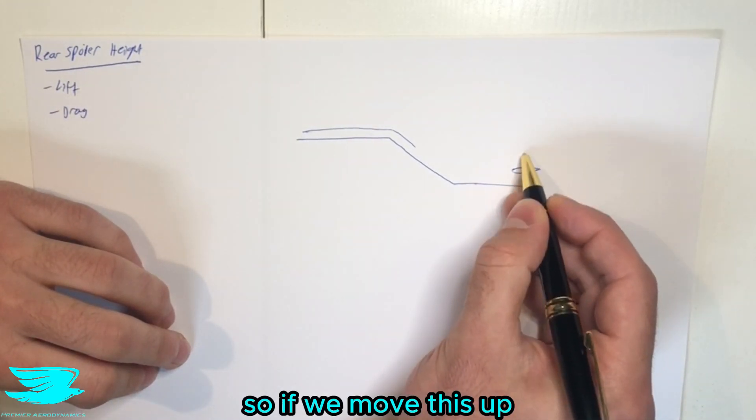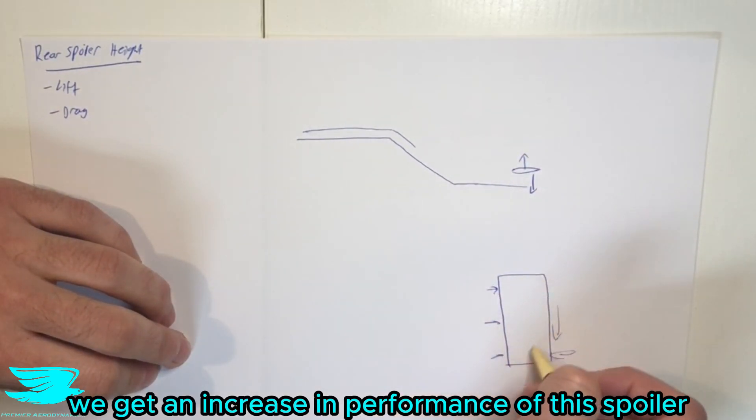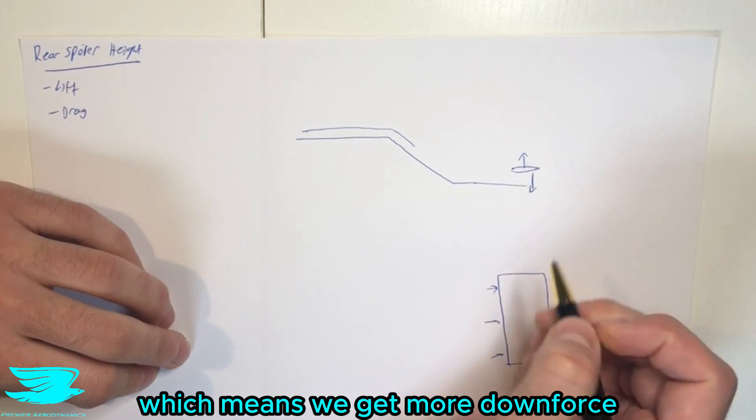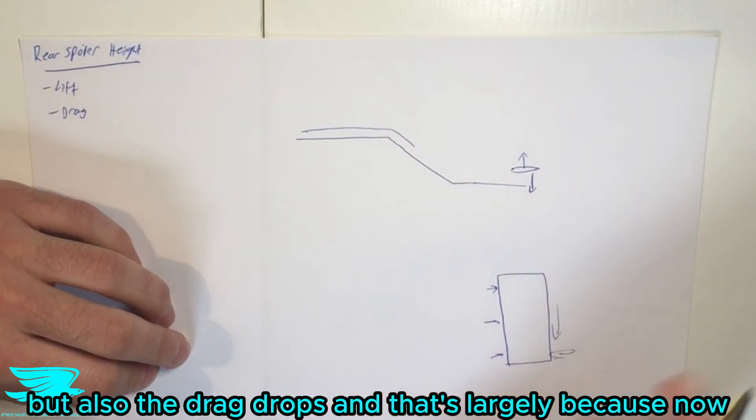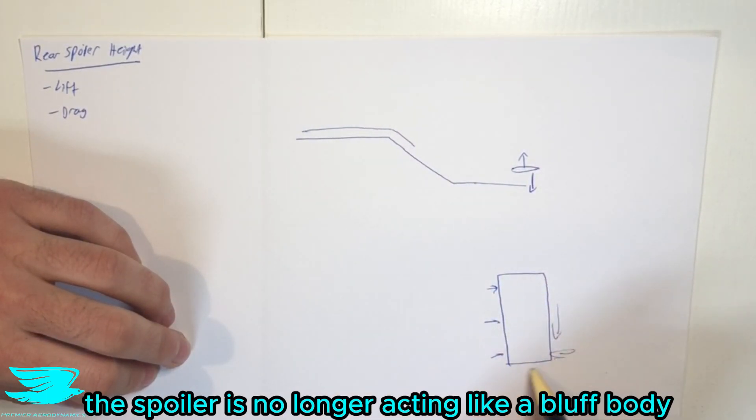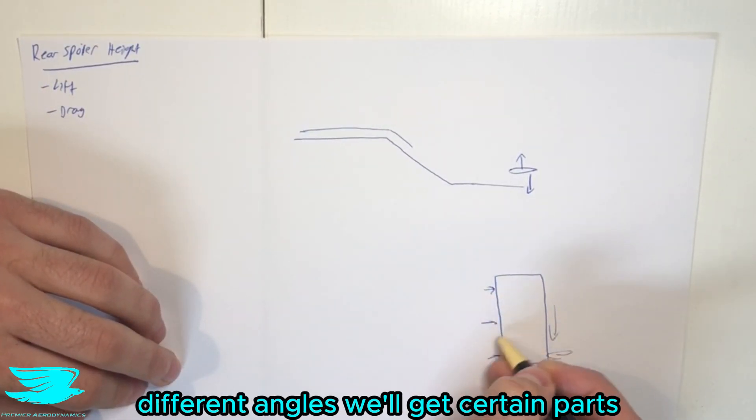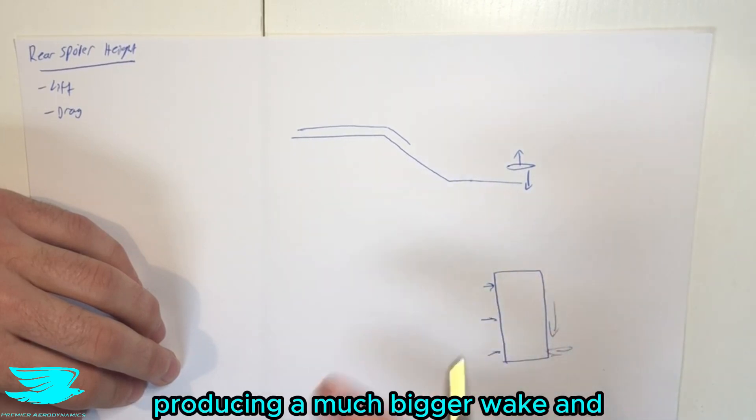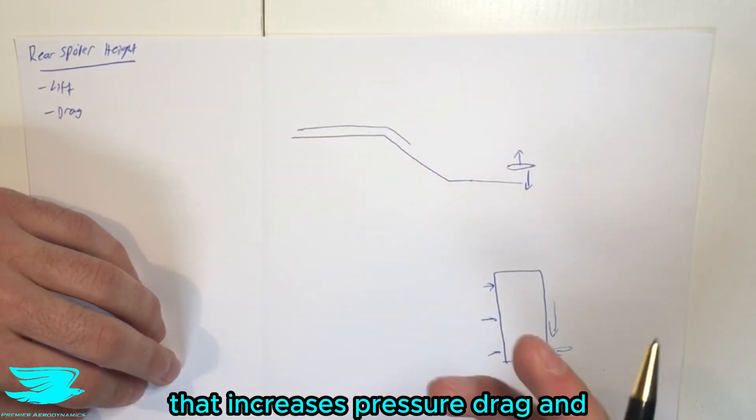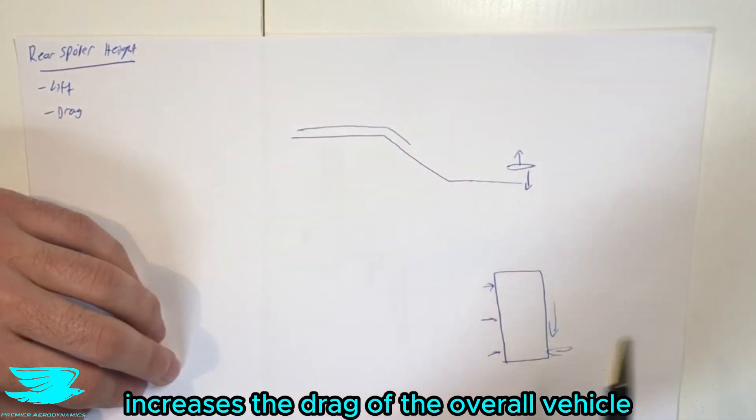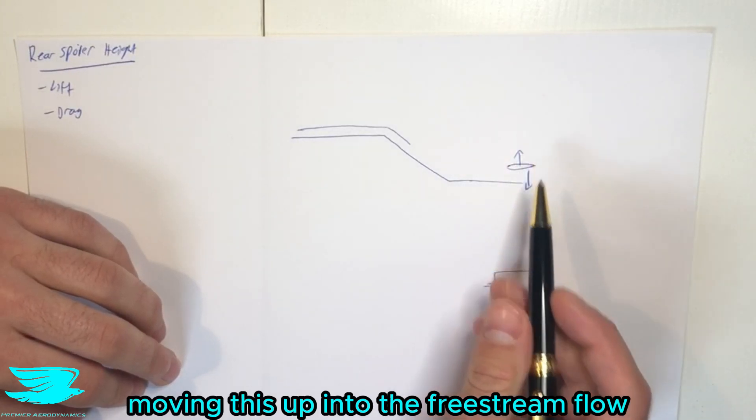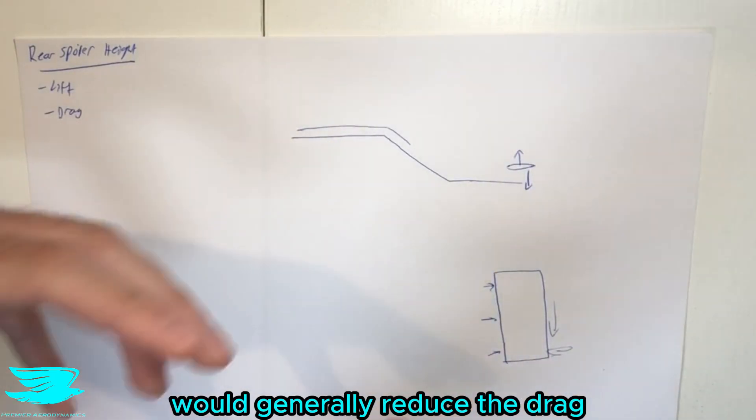So if we move this up, we get an increase in performance of the spoiler, which means we get more downforce, but also the drag drops. And that's largely because now the spoiler is no longer acting like a bluff body. Because as we mentioned here, if we have flow coming in at different angles, we'll get certain parts producing a much bigger wake that increases pressure drag and increases the drag of the overall vehicle. So actually moving this up into the free stream flow will generally reduce the drag.